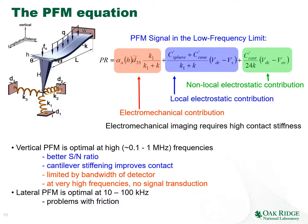In the low-frequency regime the PFM signal can be written as a contribution of several components that scale differently with the spring constant of the tip-surface junction, the cantilever stiffness, the capacitance of the cantilever and tip, and the tip-surface potential difference. The stiffer the tip-surface contact, the more quantitative the measurement — contact stiffness k1 is typically around 1000 N/m, while cantilevers range from 0.1 to 10 N/m. The local electrostatic contribution depends on (k1 + k), and the non-local electrostatic contribution depends on the cantilever spring constant only, giving an estimate of the conditions needed for quantitative measurements.